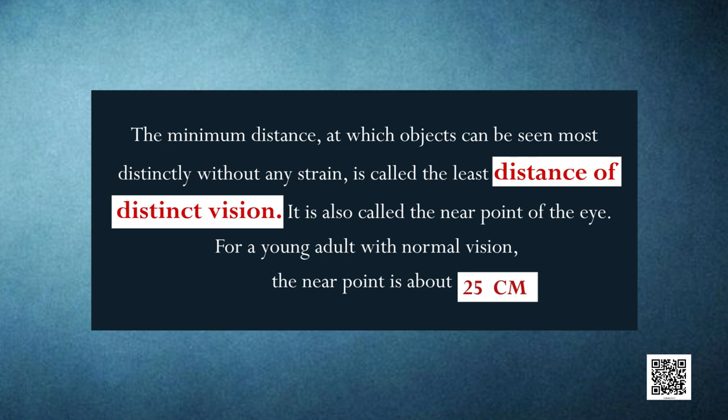If you try to read a printed page by holding it very close to your eyes, you will see blurred images or feel strain in the eye. To read comfortably and distinctly, you must hold the book or reading material at about 25 centimeters from the eyes. The minimum distance at which objects can be seen most distinctly without any strain is called the least distance of distinct vision, also called the near point of the eye. For a young adult with normal vision, the near point is about 25 centimeters.